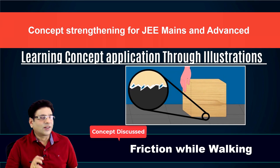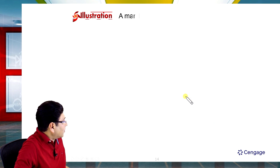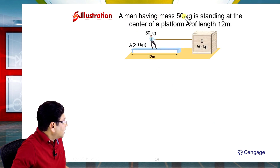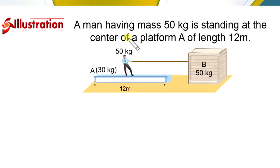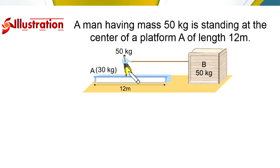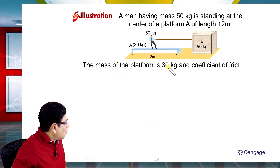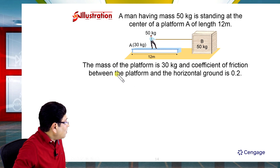In this illustration, a man having mass 50 kg is standing at the center of a platform A of length 12 meters. The mass of the platform is 30 kg, and the coefficient of friction between the platform and the horizontal ground is 0.2.